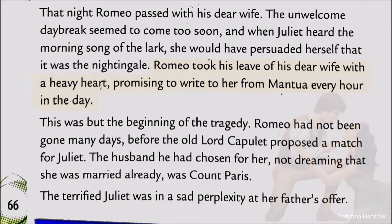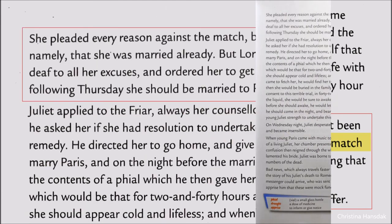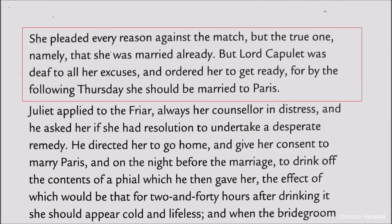Now the old Lord Capulet proposed a match for Juliet. The husband chosen for her was Count Paris. Juliet was not pleased at all with this engagement — she made many excuses, but like a deaf man, her father paid no heed.